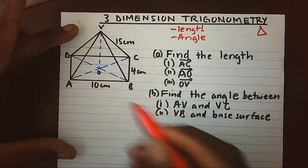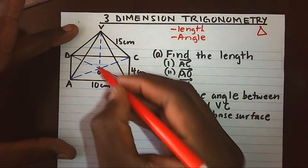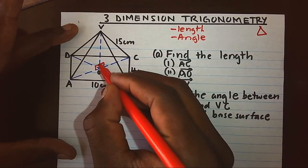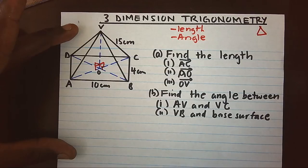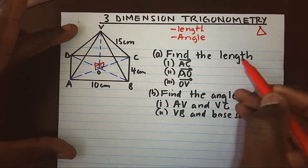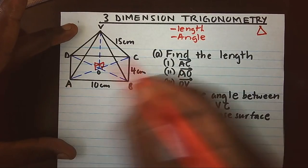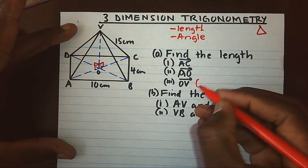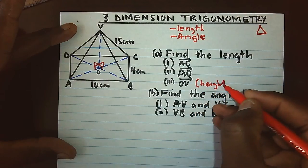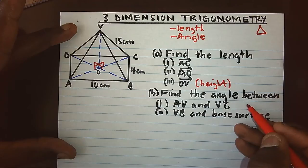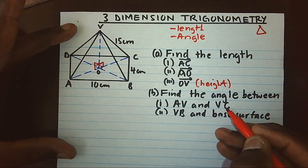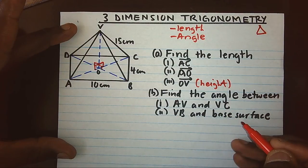This pyramid definitely has a height. Height is that which goes up and makes the base at right angle as I have shown. What is the main activity? Part A, we want to find some lengths. That is length AC, length AO, and length OV. Actually, length OV is our height. Then part B, we want to find angles between the given lengths. Angle between AV and VC, and angle between VB and the base surface.